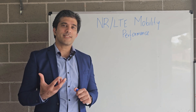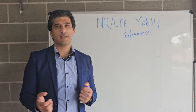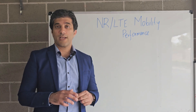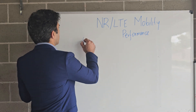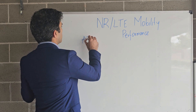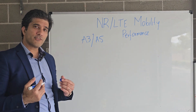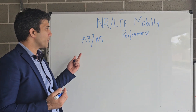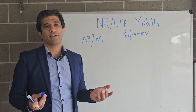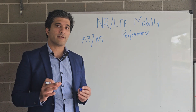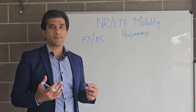We have mobility scenarios for NR that are also similar to LTE — concepts like A3, A5, B1. Today I will focus on A3 and A5, these are the two types of handovers. I will try to focus on where it's better to use A3 and where it is probably better to use A5, and this is a debate because in my career I've used multiple strategies and seen multiple types of results.